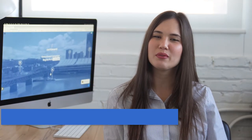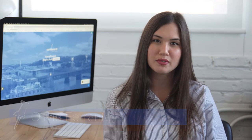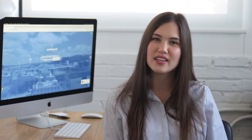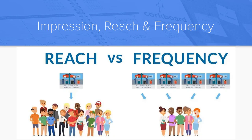What is the difference between reach, impressions, and frequency? Oftentimes you'll see these three words together, whether you're analyzing data or selecting a campaign objective. It's important to know the difference and understand how they tie together. First, reach is defined as the total number of people that have seen your advertisement, or how many people you have reached. Impressions are calculated when a person sees your ad.